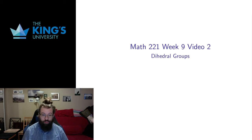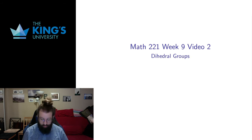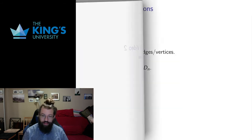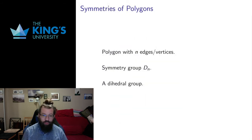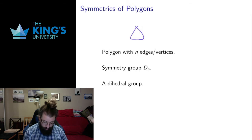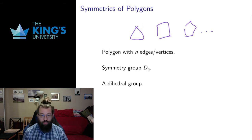Hello and welcome to video 2 for week 9. In this video I'm going to define a thing called the dihedral group. It's a group of symmetries of polygons — specifically regular polygons with n edges and vertices. So starting with the equilateral triangle, the square, the pentagon, and so forth.